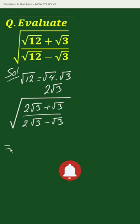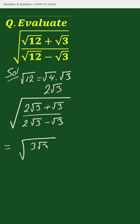This equals the square root of: (2√3 + √3) in the numerator becomes 3√3, and (2√3 - √3) in the denominator becomes √3.